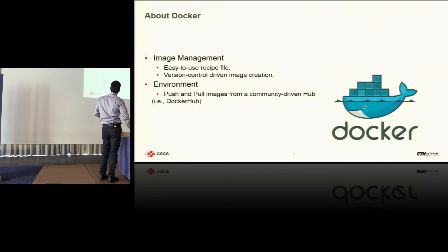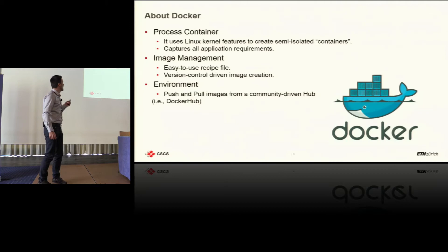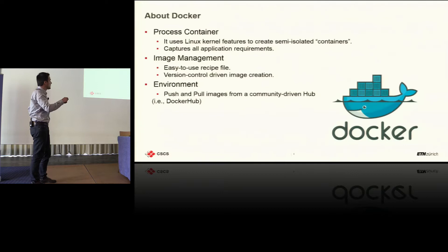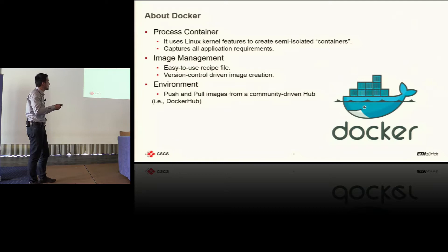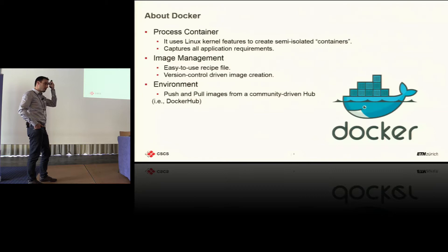Let's start with the first and compulsory slide about Docker — sorry about that, it's the only one, and you will see why this is important. I imagine that all of you are familiar with Docker, but just so that we start from the same page. What Docker provides — it relies on Linux kernel features to create semi-isolated containers. In practical terms, it captures all application requirements inside one binary block. It also gives us easy-to-use recipe files and version control, even image creation. A blob is created out of layers that mark the deltas between different versions of your container.